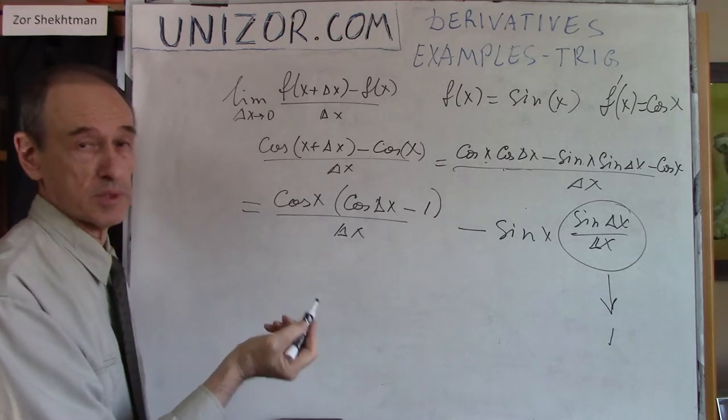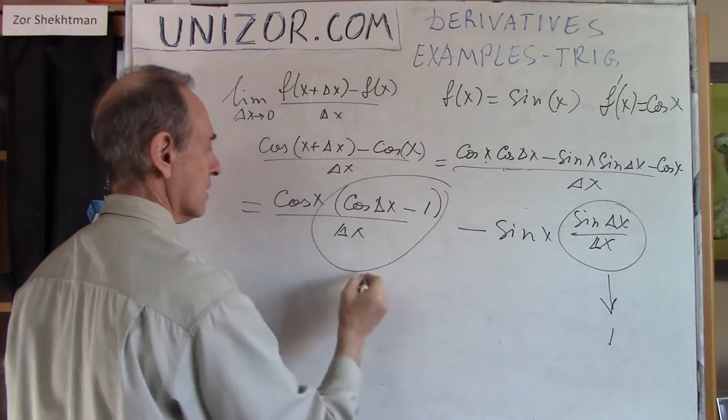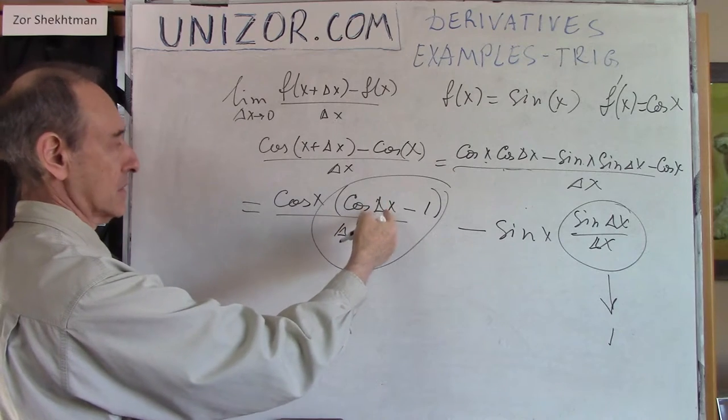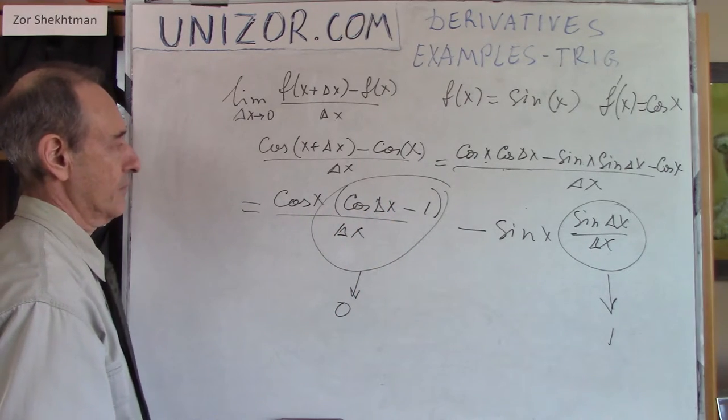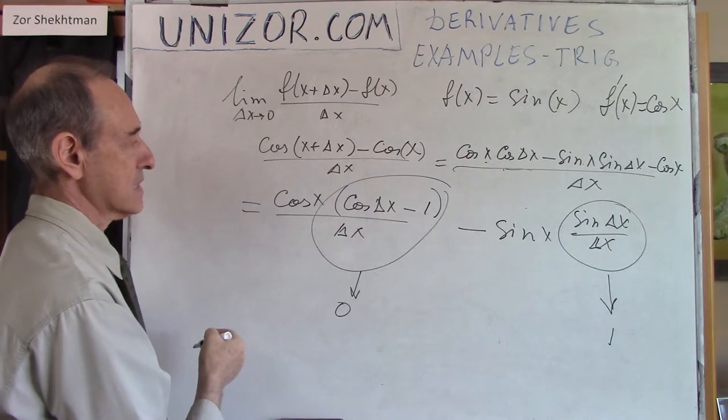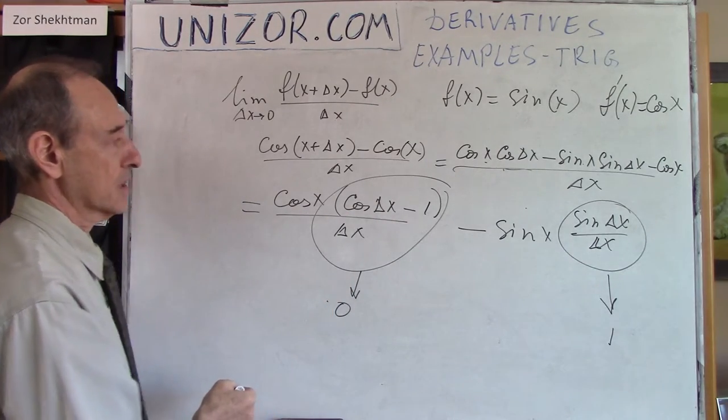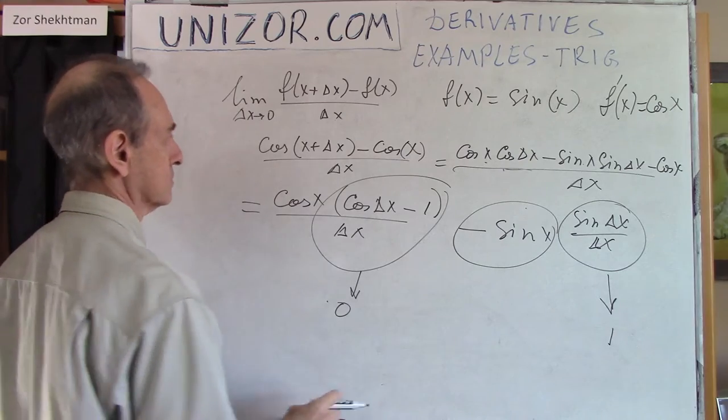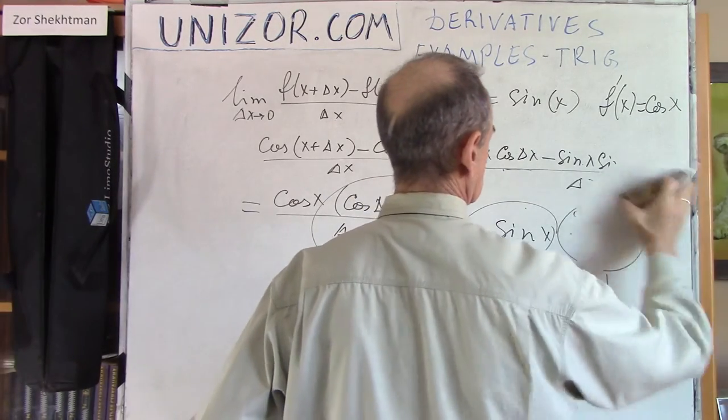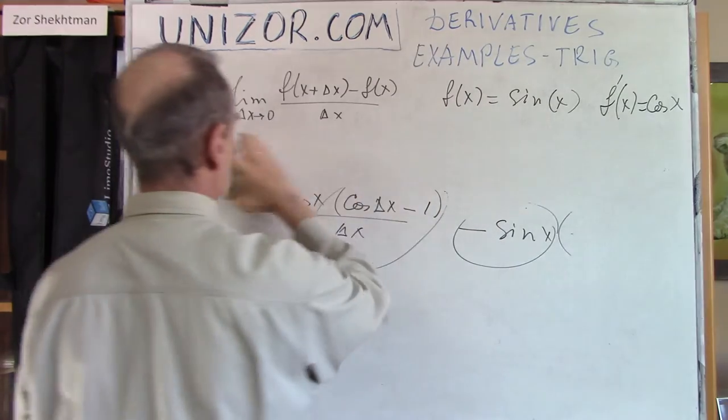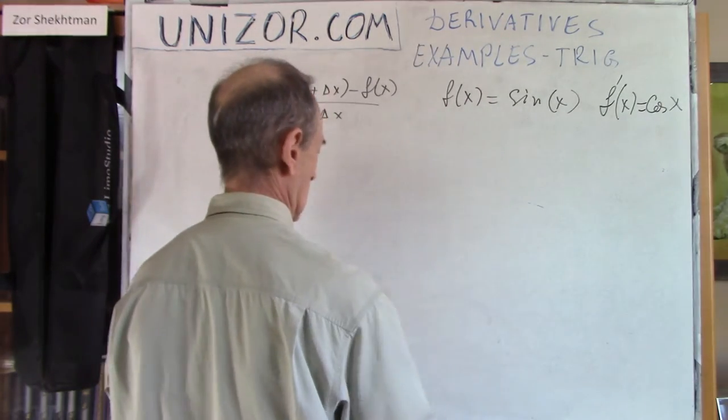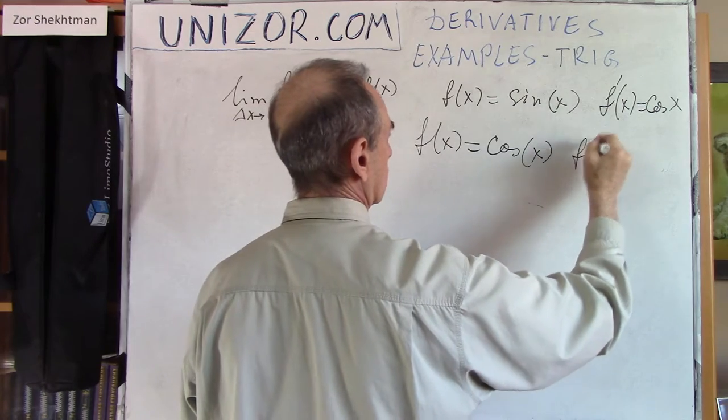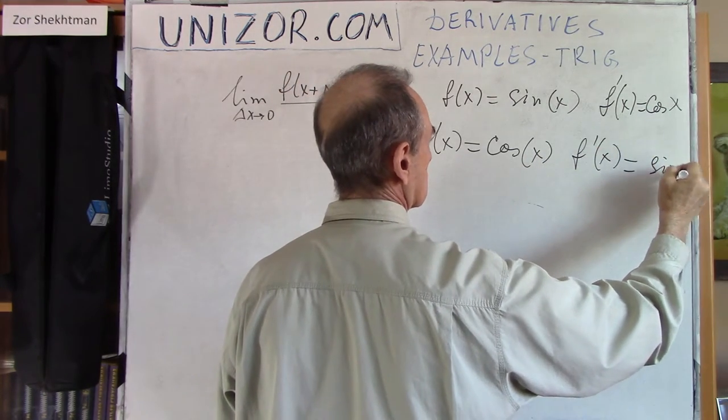And from the previous problem, we did exactly the same thing. This thing goes to zero because this thing is actually, with a minus sign, two sine squared of delta x over two divided by delta x. So this square with the sine of delta x makes the whole thing go to zero. And the result is minus sine x.